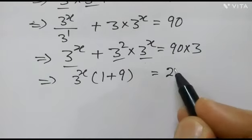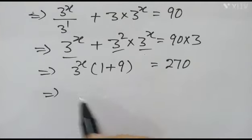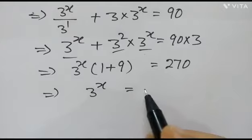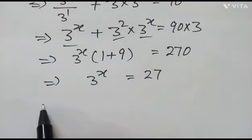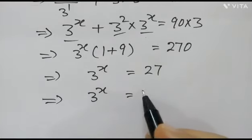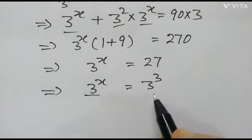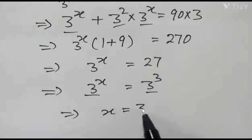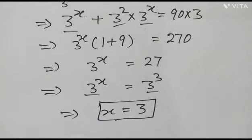So 3 to the power x times 10 is equal to 270, which means 3 to the power x is equal to 27, or 3 to the power x is equal to 3 cubed. Since the base is the same, x is equal to 3. OK friends, thank you.